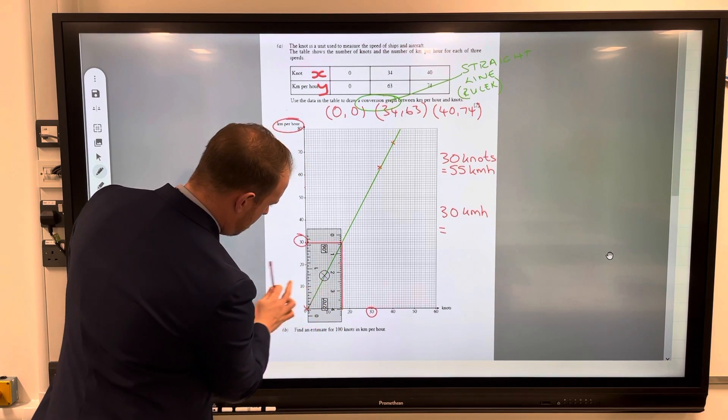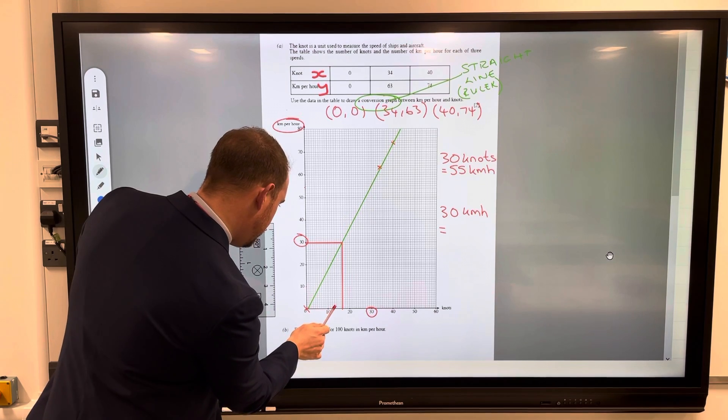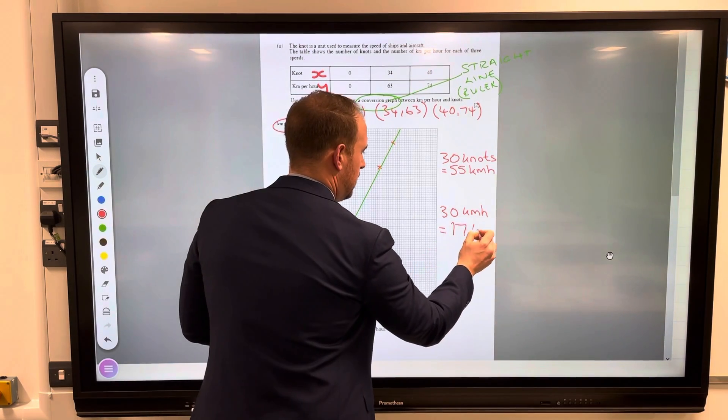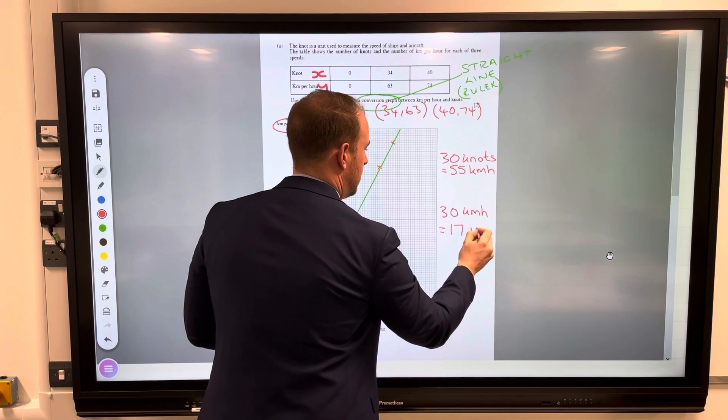And then down all the way to the x-axis. And there we have 11, 12, 13, 14, 15, 16, 17, 17 knots. Let's make that look a little bit neater.